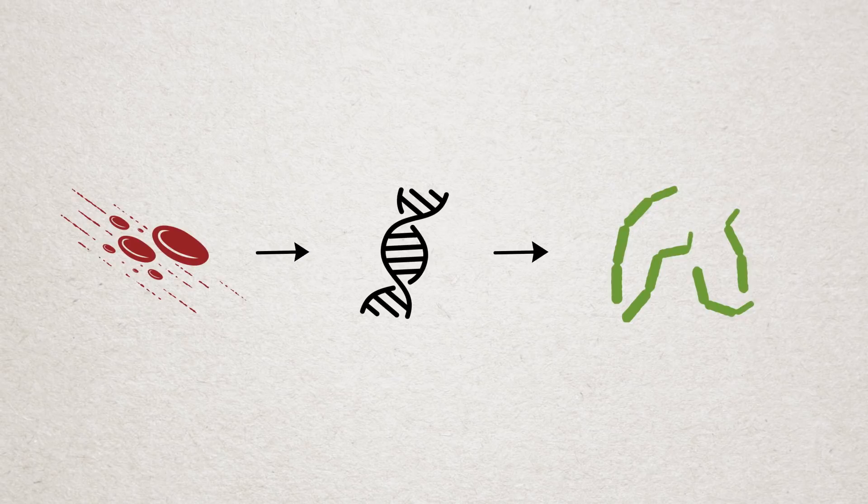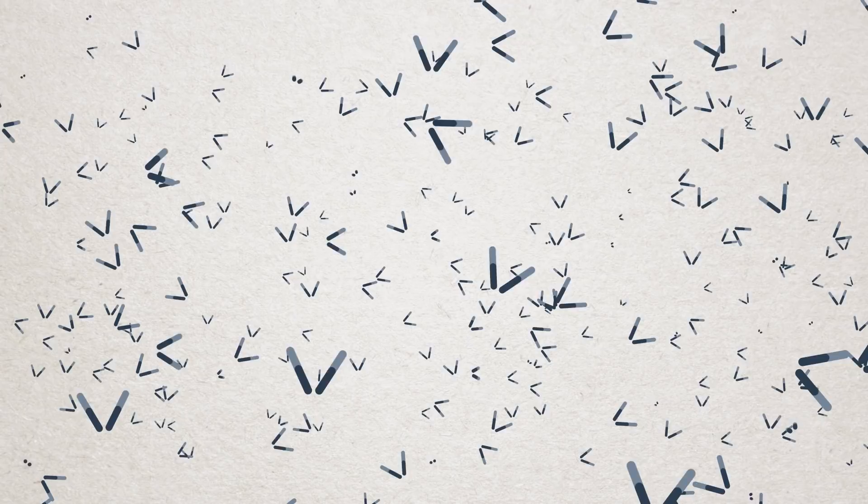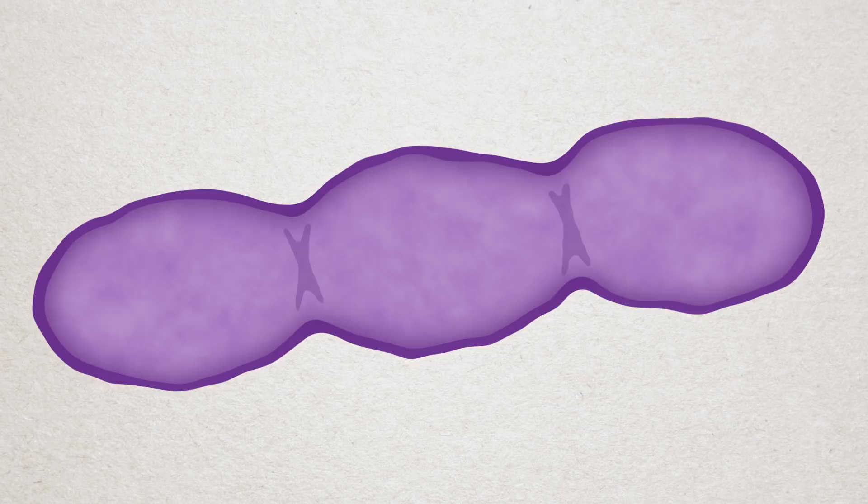But it might soon be easier to obtain nanobodies. A team has made a giant nanobody library in yeast cells that will allow researchers to skip the animal inoculation step.